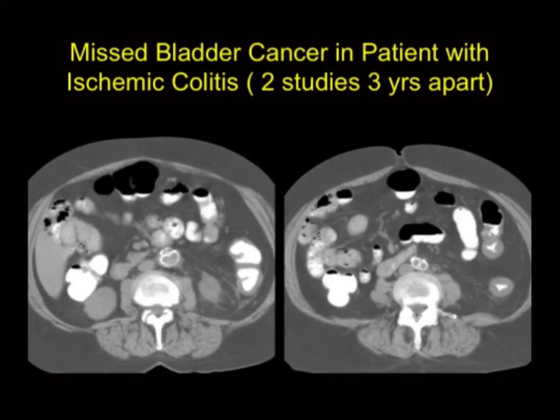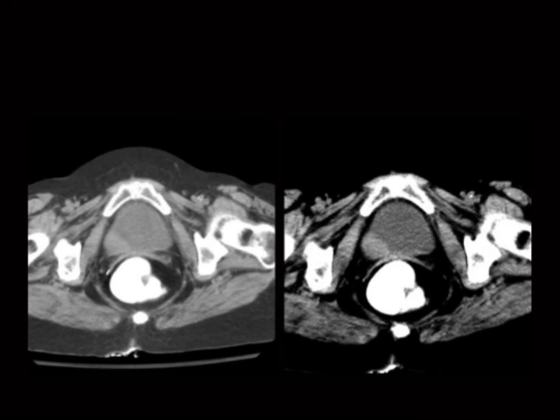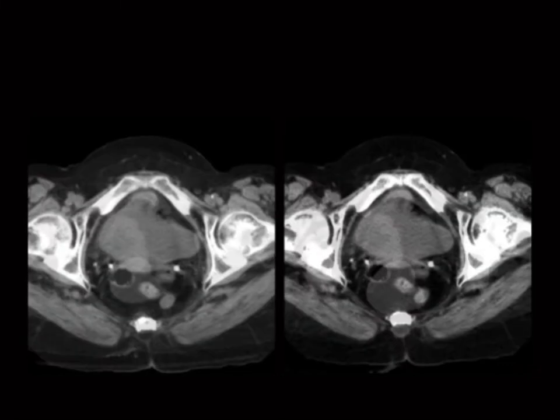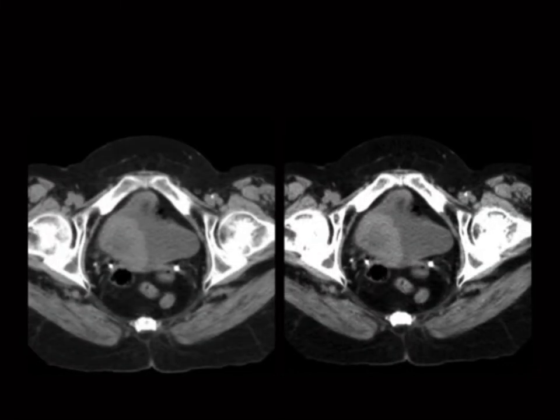I came across a legal case where a patient came into the ER with acute abdomen. The radiologist correctly said ischemic bowel, the patient had surgery. Three years later, the patient has a mass in the bladder. Going back to the scan from three years earlier — sure enough, around seven o'clock, there's a mass in the bladder. The study wasn't done for bladder cancer, the patient did not have IV contrast, but there was a soft tissue mass that is now twice as large, and the person won the lawsuit.